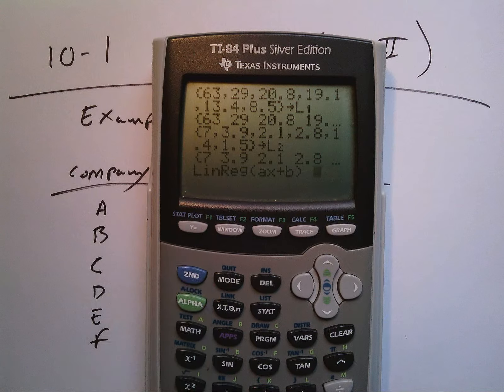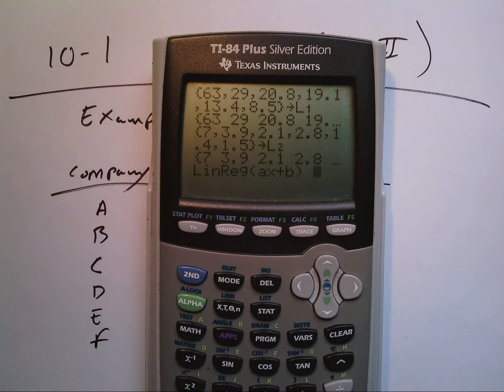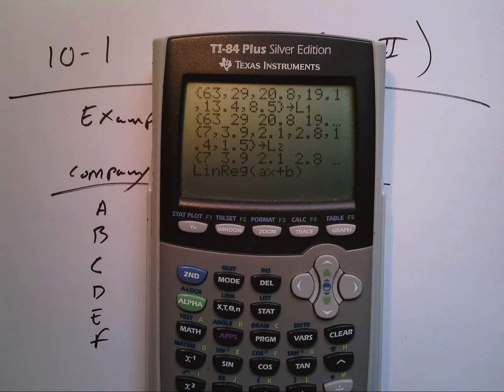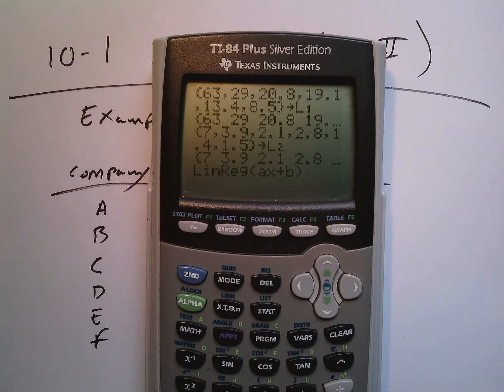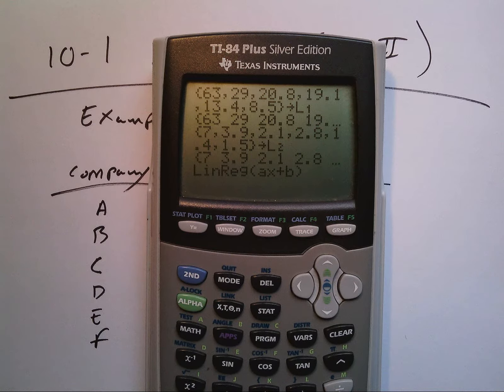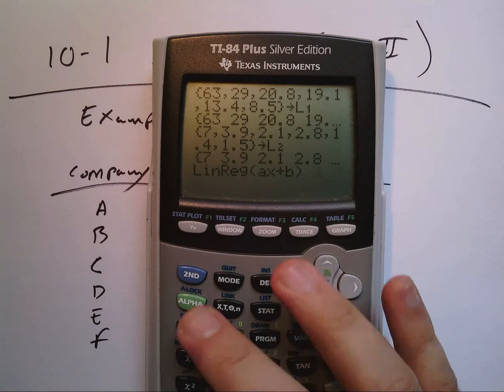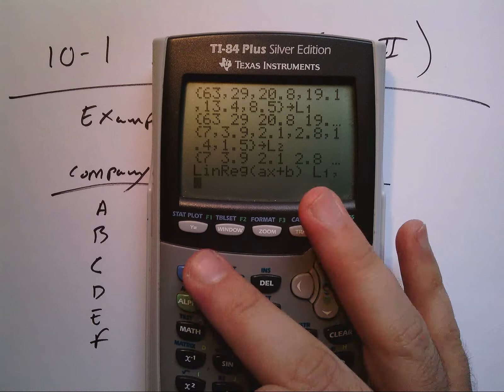You're still going to enter an x list and a y list, which is L1 for the x, comma L2 for the y, because that's how I stored my data set.